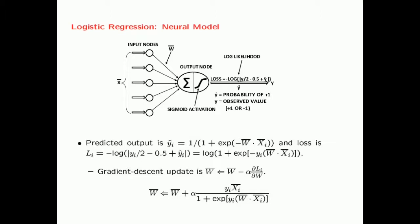The neural model for logistic regression is very similar to the SVM. It has the same number of input nodes — one for each feature value — and one output node. However, one difference is the activation function at the output node: here we use the sigmoid activation, which converts the prediction into a probability. Similarly, the loss function is also different — we have a predicted output which is a probability, and a negative log likelihood loss.